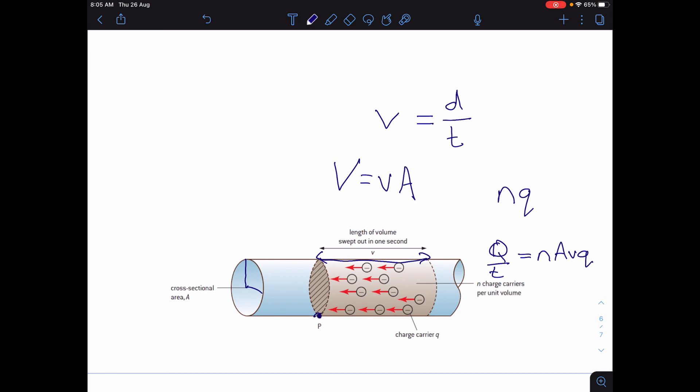...where N is the number of charge carriers per unit volume, A is the cross-sectional area, V is the velocity, and Q is the charge on one of those charge carriers.